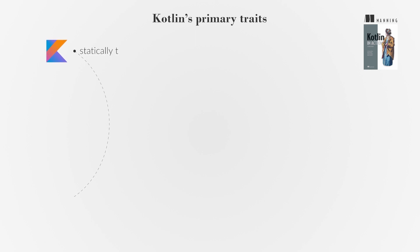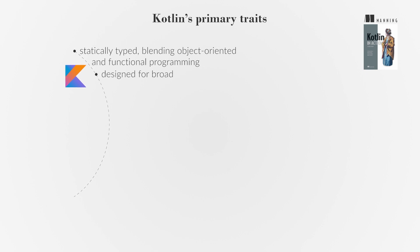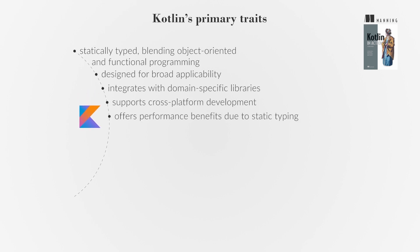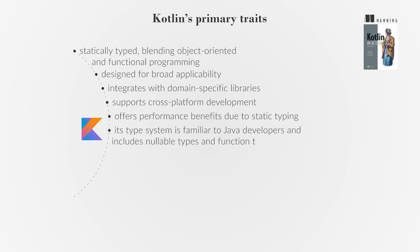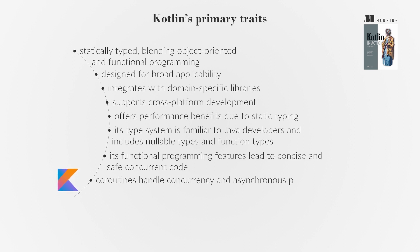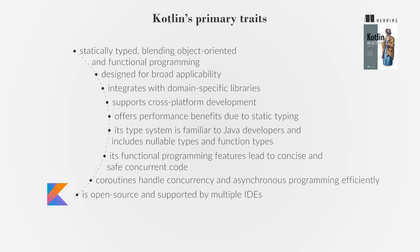Kotlin is statically typed, blending object-oriented and functional programming. It's designed for broad applicability and integrates with domain-specific libraries. Kotlin supports cross-platform development and offers performance benefits due to static typing. Its type system is familiar to Java developers and includes nullable types and function types. Kotlin's functional programming features lead to concise and safe concurrent code. Coroutines handle concurrency and asynchronous programming efficiently. Kotlin is open-source and supported by multiple IDEs.